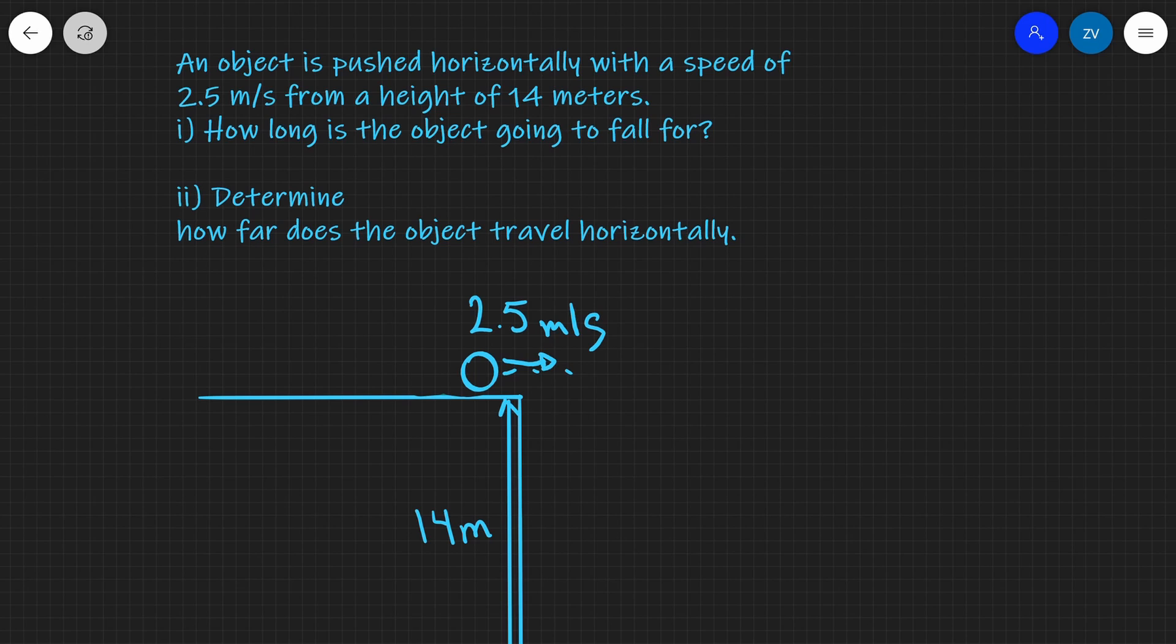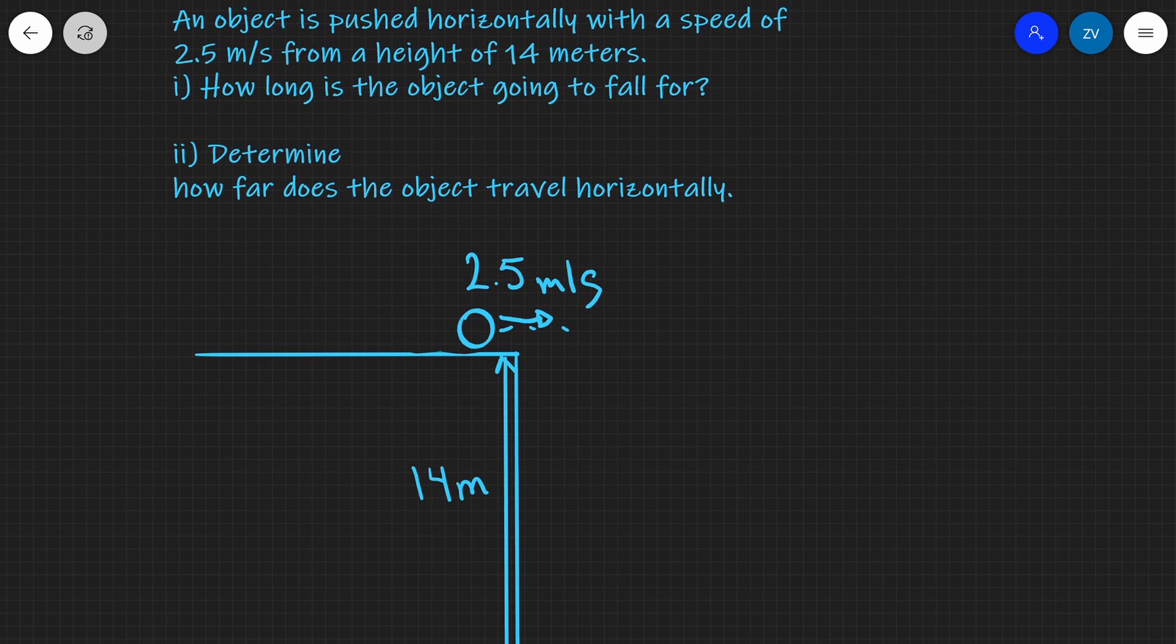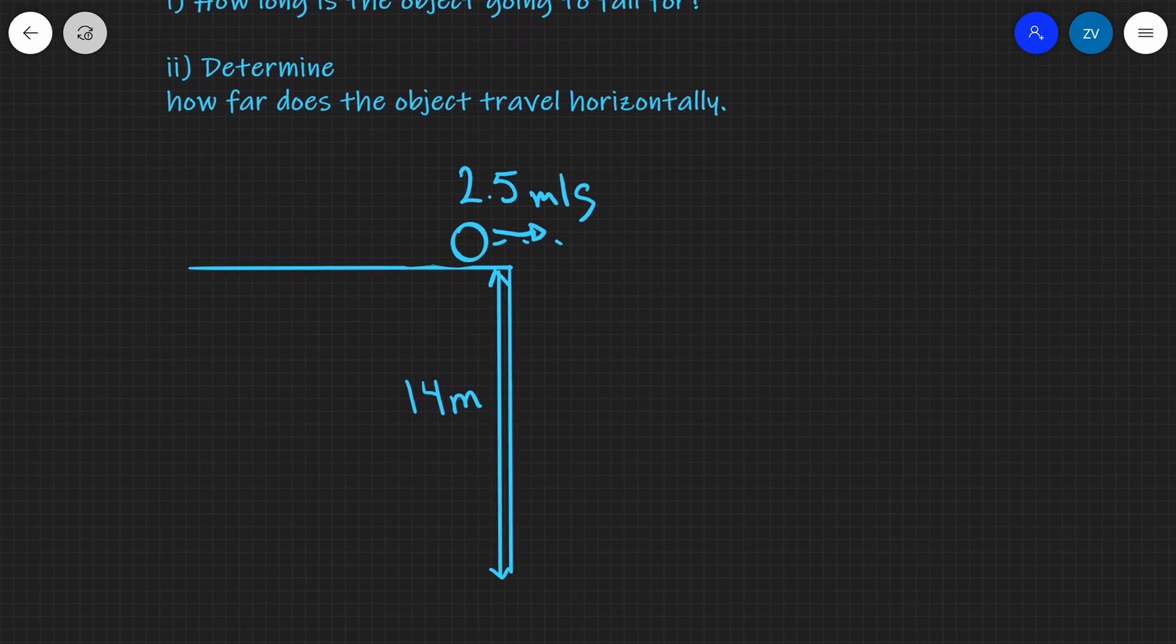We have an object which is being pushed horizontally with a speed of two and a half meters per second from a height of 40 meters. How long is the object going to fall for and determine how far does the object travel horizontally?